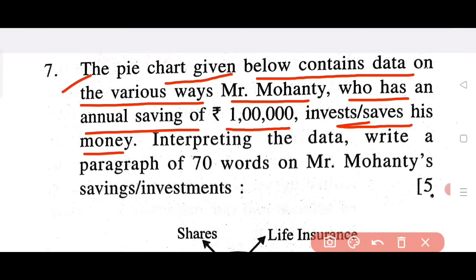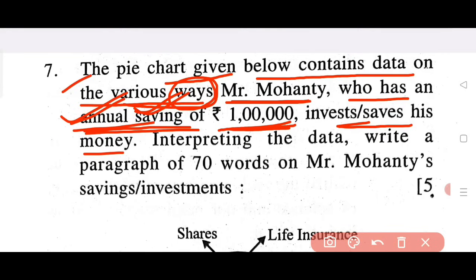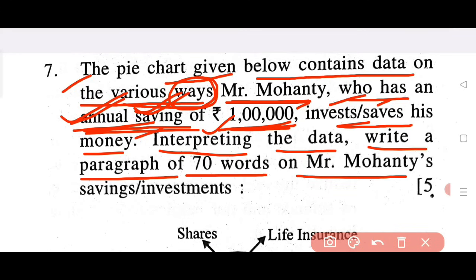What is the pie chart showing? The various ways of saving and investing. The annual saving means 1 lakh. Interpreting the data, write a paragraph of 70 words on Mr. Mohanty's savings and investment.